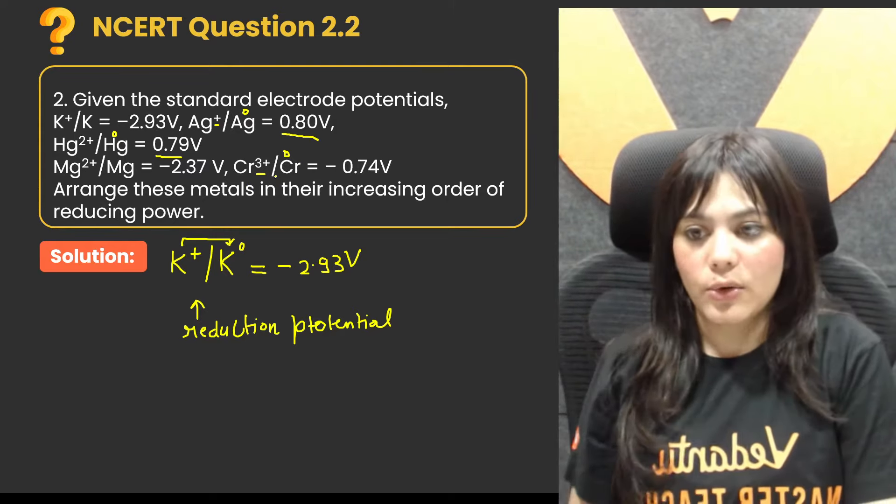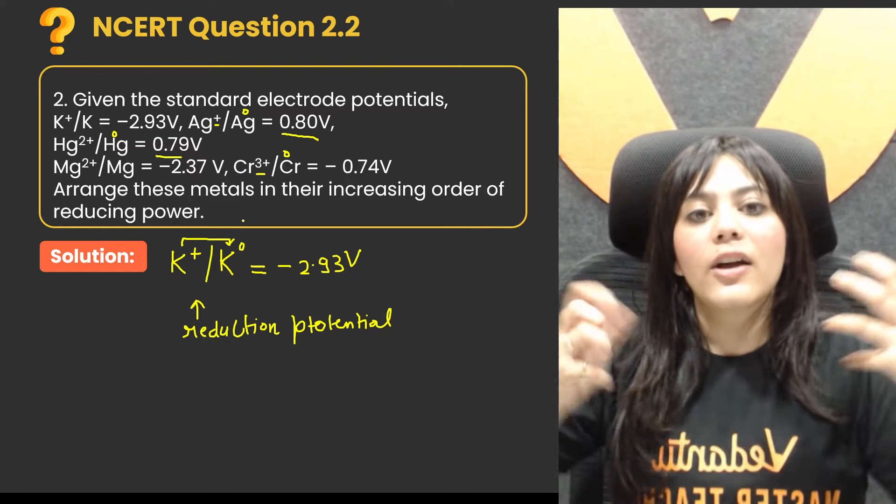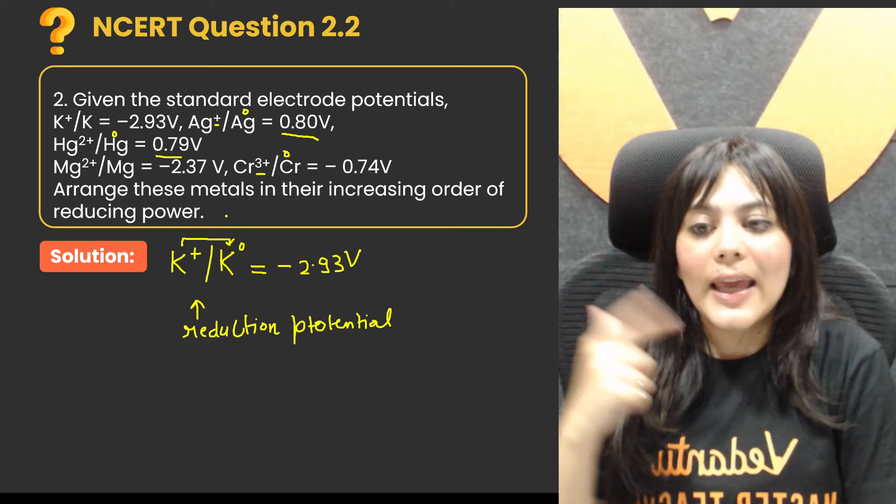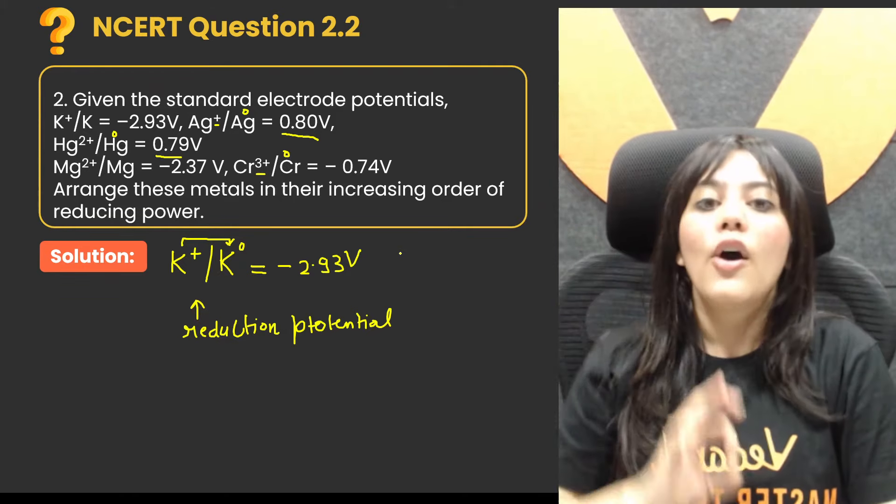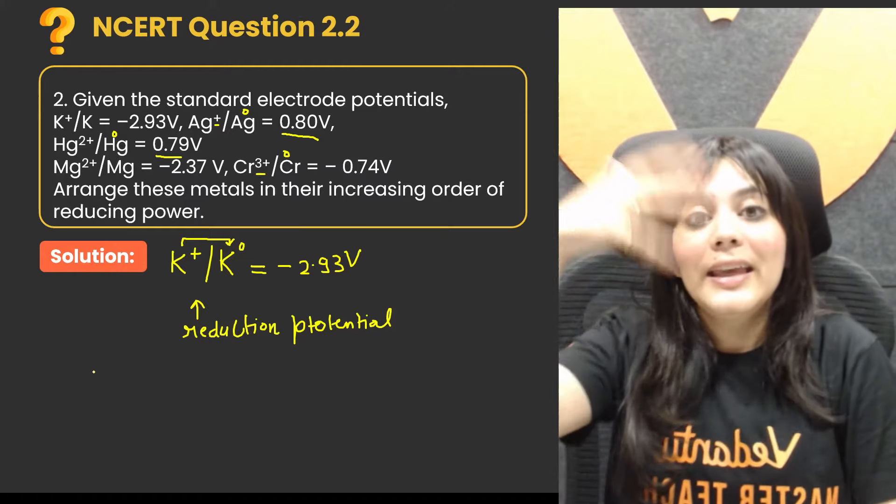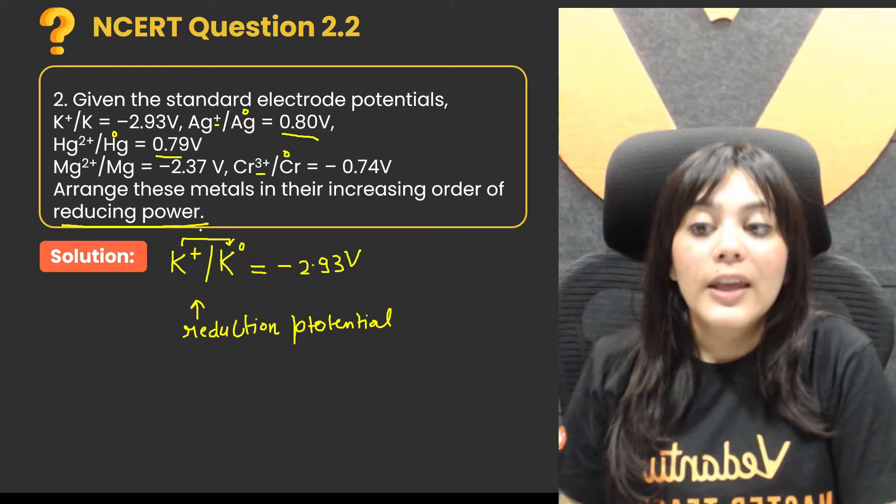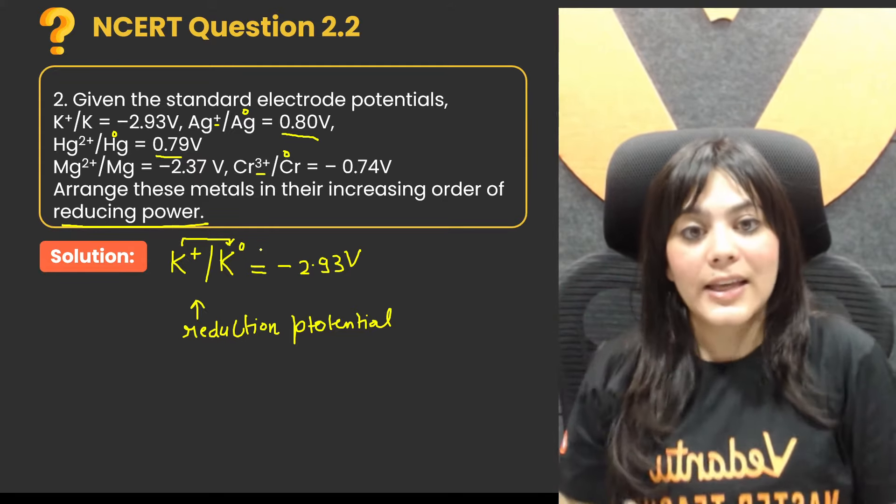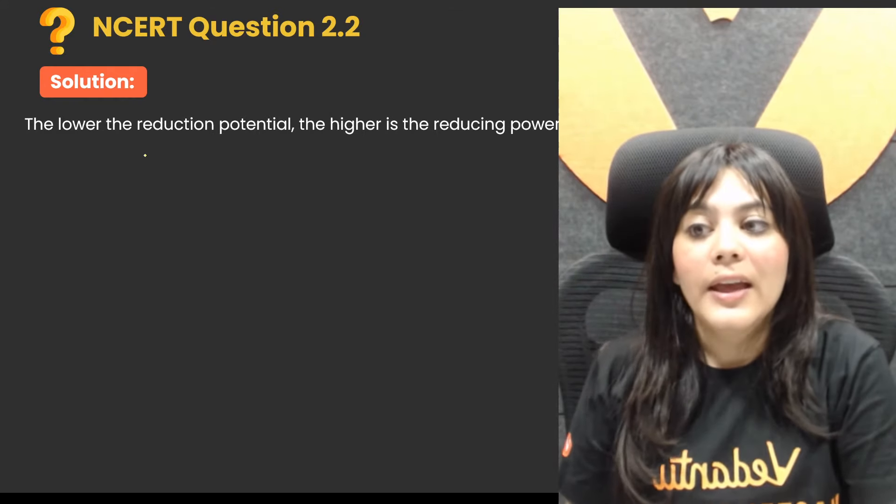Now they're asking you to arrange these metals in their increasing order of reducing power. What does reducing power mean? The one that is a good oxidizing agent, which is highly reactive.